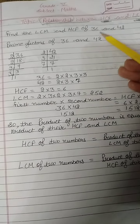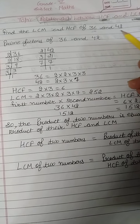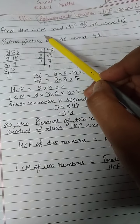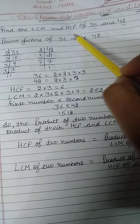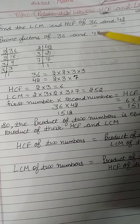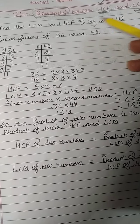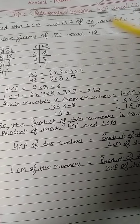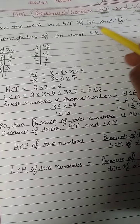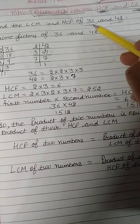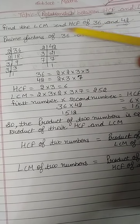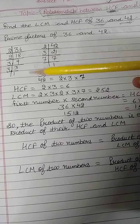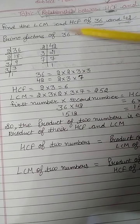Here we have two numbers, 36 and 42. We will find both the LCM and the HCF of these two numbers. You already know how to find the HCF and LCM from our previous lessons.